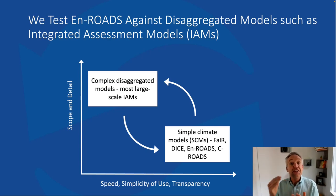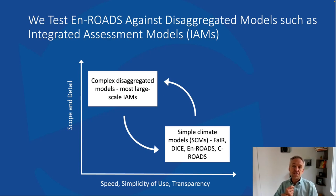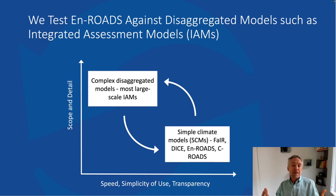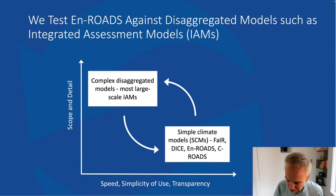We test against them in order to build our confidence. When we notice that our results are very different than their results, that's a spark to ask whether there's a way to improve En-ROADS. The arrow going back is that policymakers often use our models and run them fast many times before designing a single run in one of the slower disaggregated models.